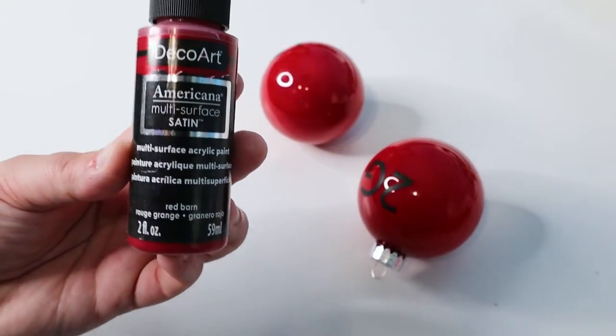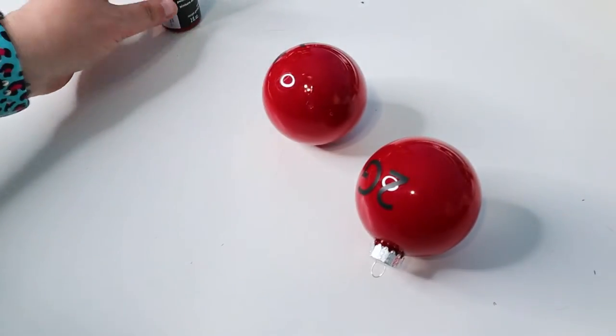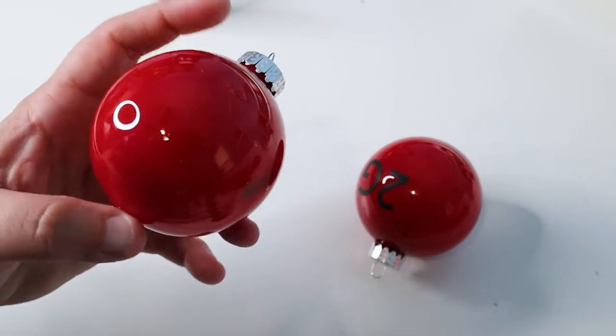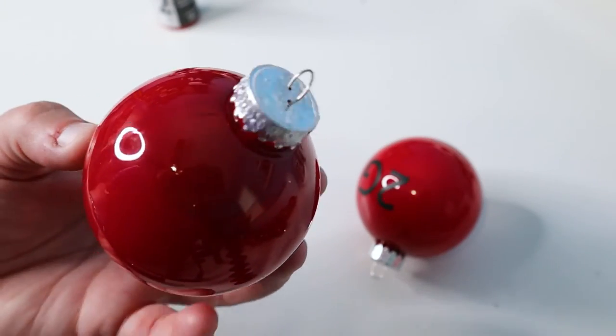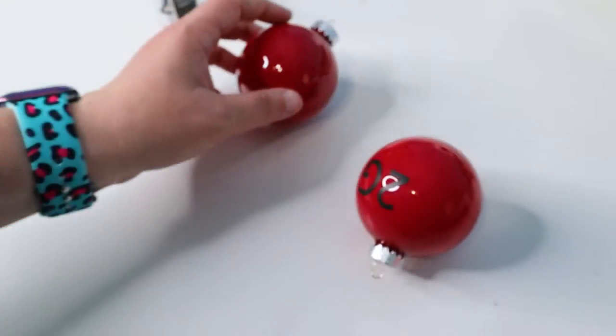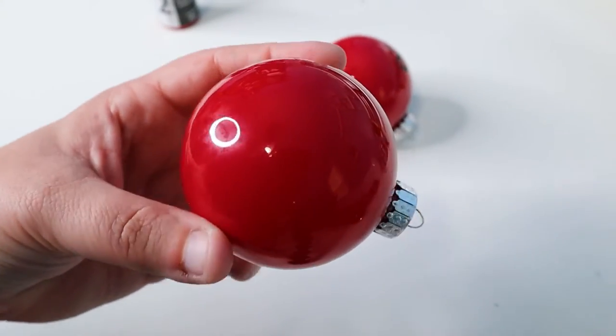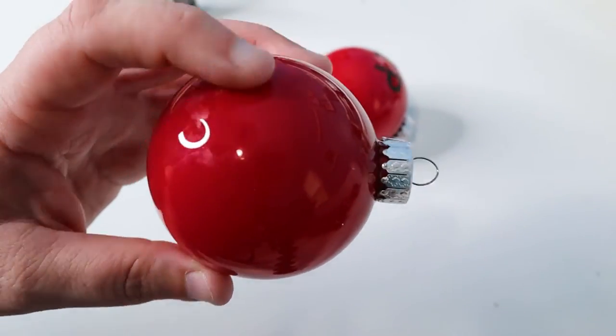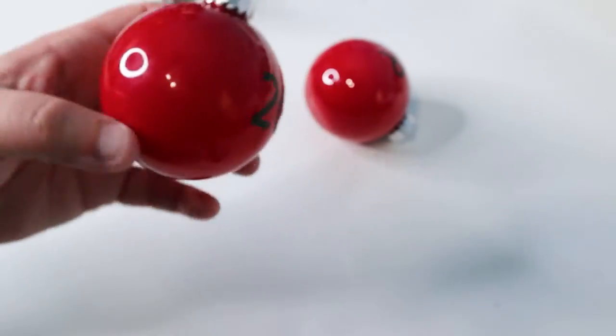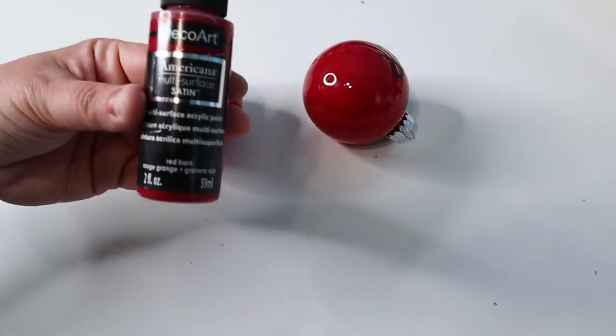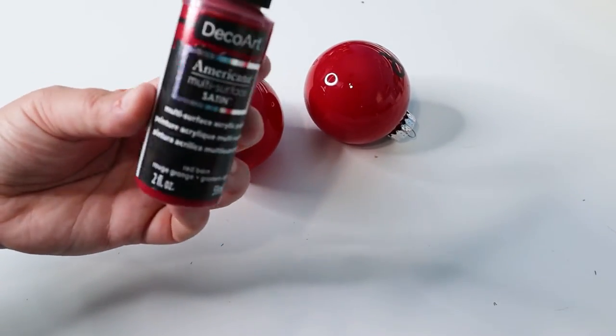Next we have number two, which is our DecoArt Americana Multi Surface Satin in red barn. So we have two in plastic. This actually looks like it held up pretty okay. I don't really see any missing spots or anything. This one looks to have held up really, really well on plastic. Let's take a look at glass. Again, I don't see any big glaring spots. This is dirt from the tape that was on it, but everything else looks really good. I would say that this DecoArt Americana would hold up for a while. This would definitely be a choice I would use if I was going to paint the inside of ornaments.